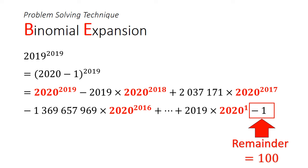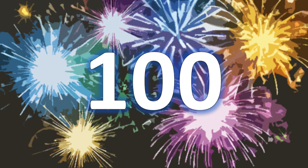So the remainder has to be negative 1. But we don't typically accept negative remainders. So we need to borrow a 101 from the previous terms to add to the negative 1 to get a remainder of 100. So, did you get the answer?